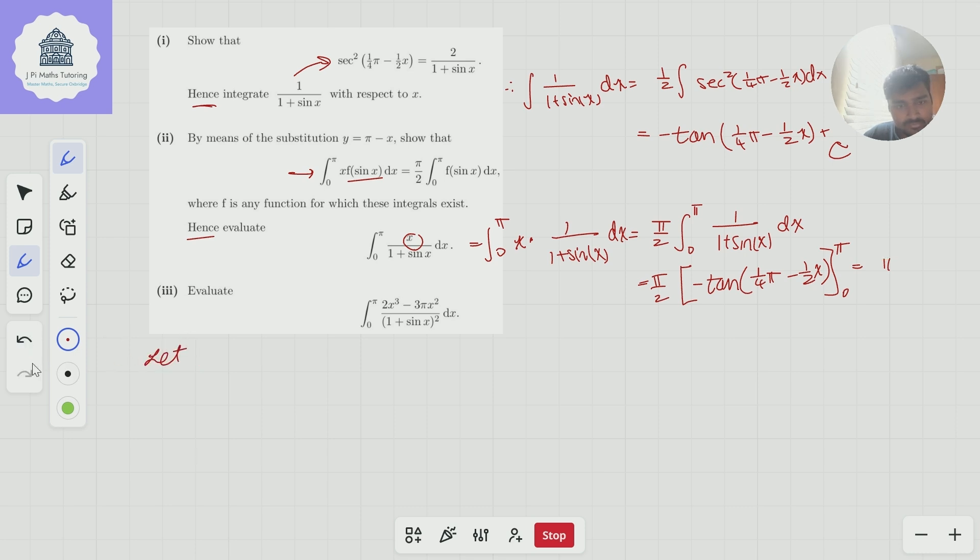So I'm going to let i subscript k just equal the integral from 0 to π of x to the k times f of sine x dx. And what I want to do is get a rule a bit like this. So this rule basically says that i₁ is equal to pi over two times i₀. Now, what I want is a rule that involves i₃, because here I've got an x cubed.